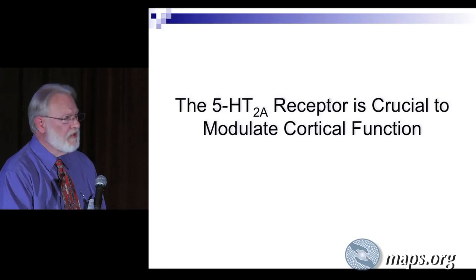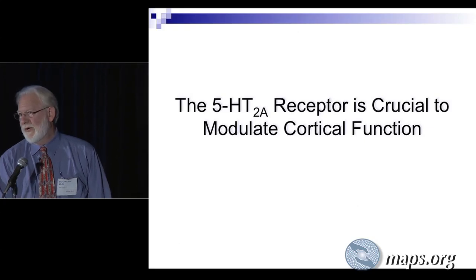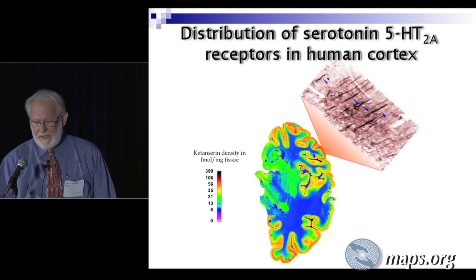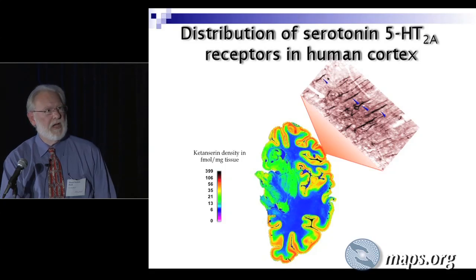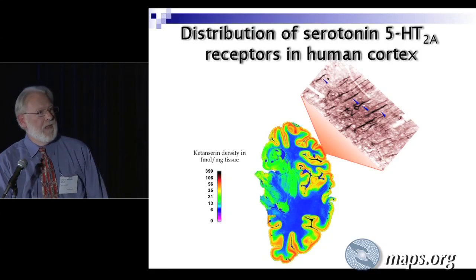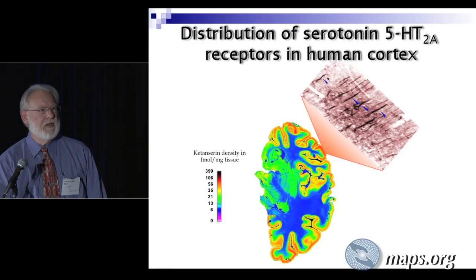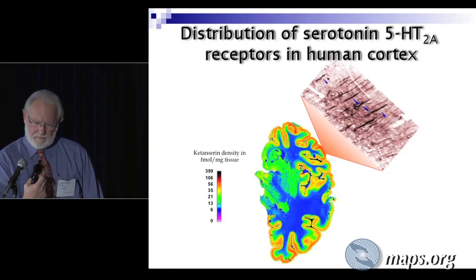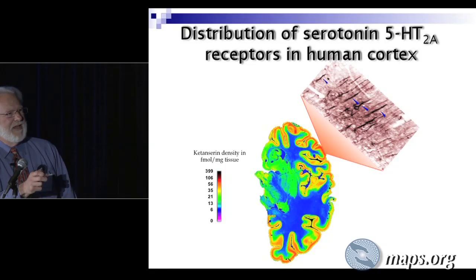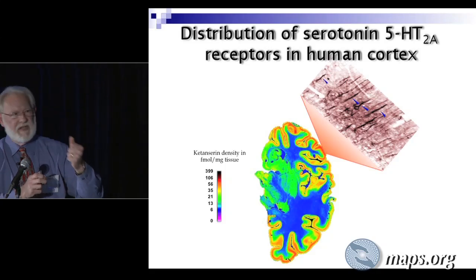The serotonin 2A receptor, once discovered, became a very critical target in the brain — actually one of the key targets for atypical antipsychotic drugs like Risperdal and olanzapine used to treat schizophrenia. It's located in areas very critical for normal cognitive function. Looking at a section of a human brain — a post-mortem brain of a former psychedelic user — a slice was incubated with a radioactive tritium-labeled molecule called ketanserin. Ketanserin is a drug which binds tightly to serotonin 2A receptors, allowing you to map where those receptors are in the brain.